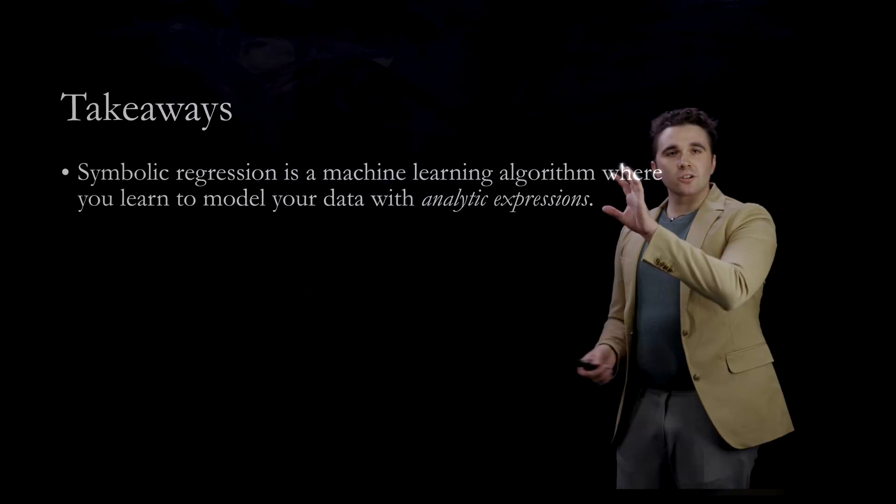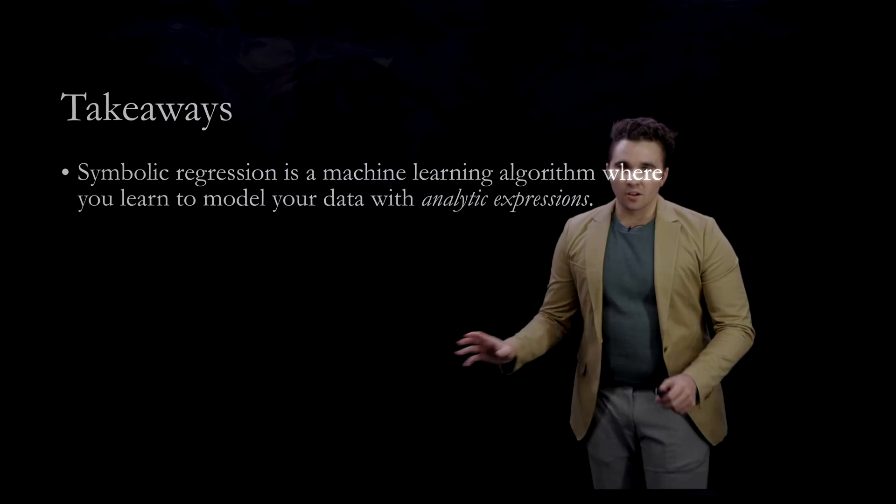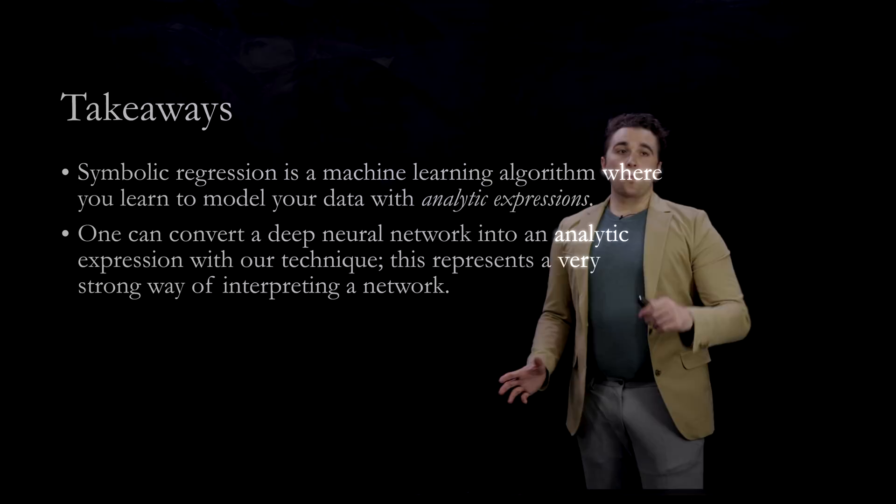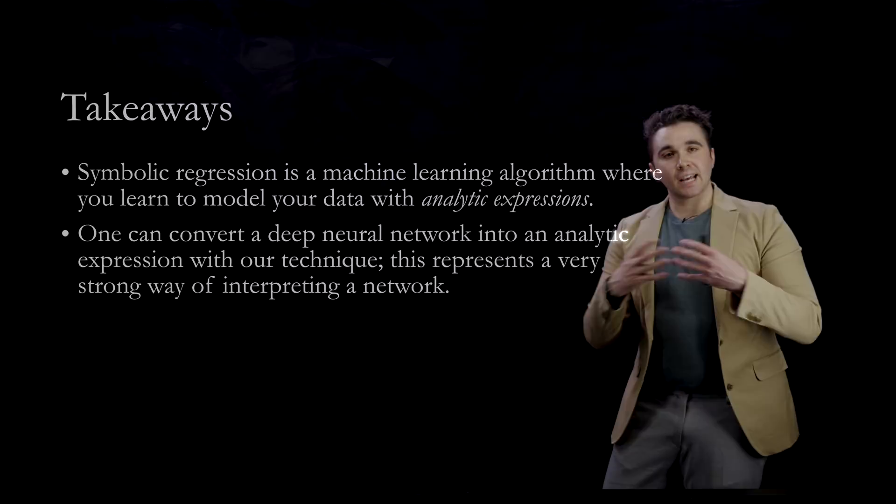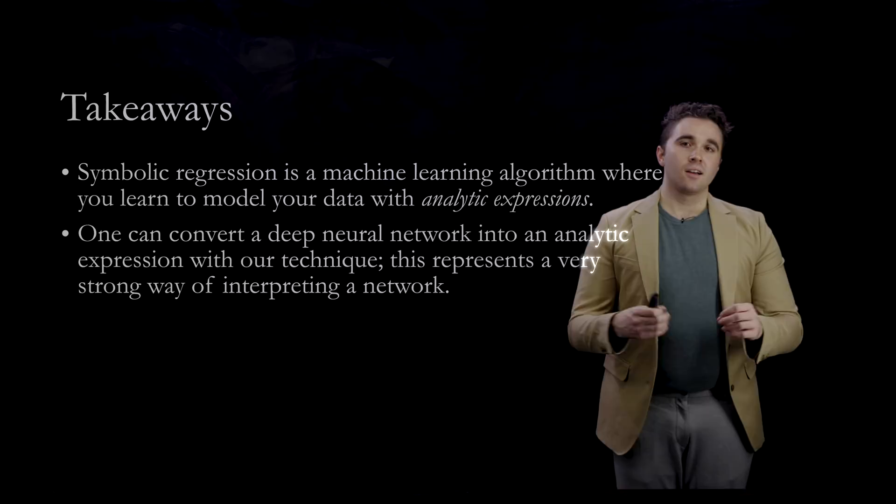Symbolic regression is a machine learning algorithm where you basically learn to model your dataset by searching the space of analytic expressions. One can convert a deep neural network into an analytic expression with the technique I'm going to show you today, and I think this represents a very strong way of interpreting a neural network.